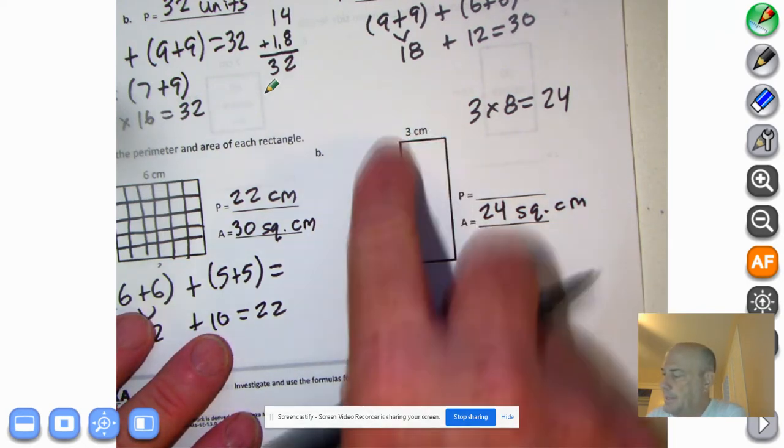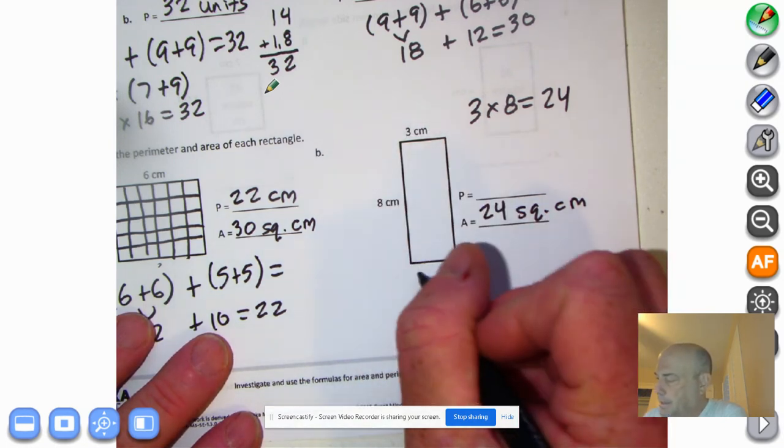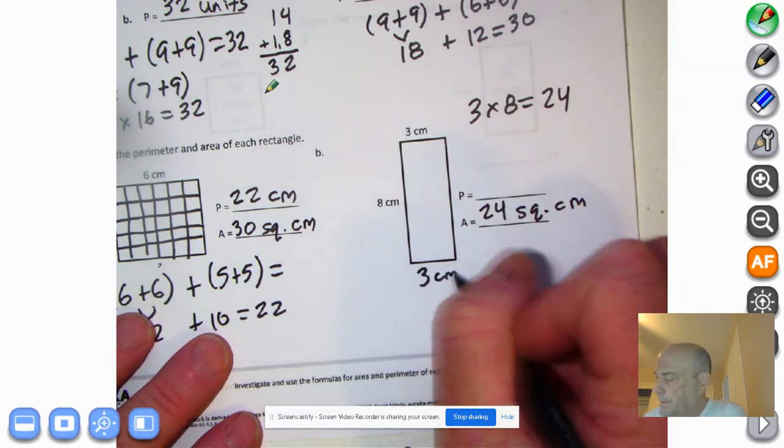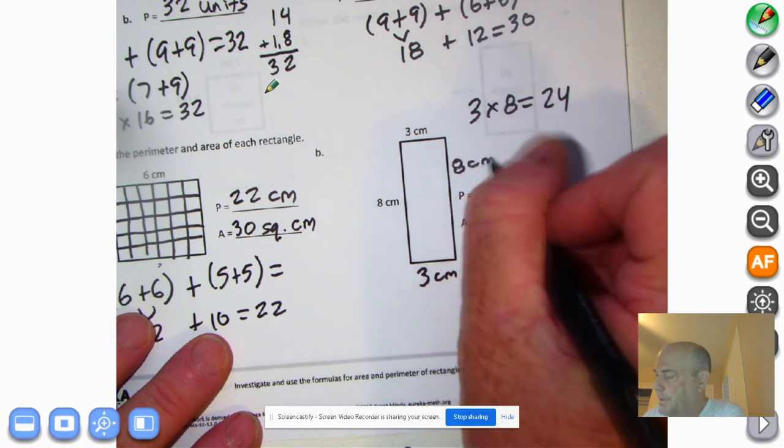Perimeter. Outside. So three, this is also three centimeters. And this would also be eight centimeters. Equal sides to a rectangle, right?